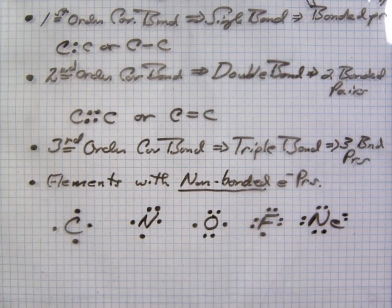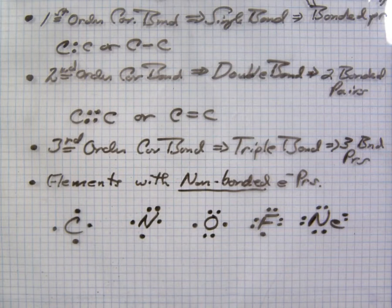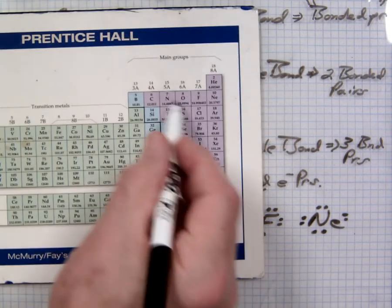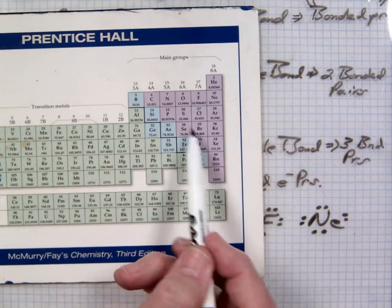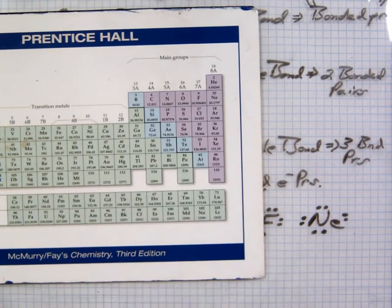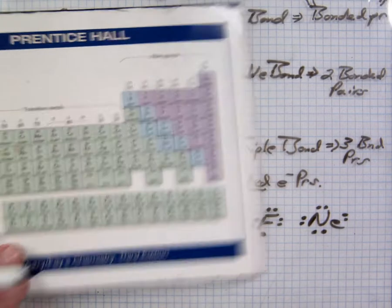According to the octet rule, elements gain or lose electrons by the path of least resistance to achieve a noble gas configuration. For molecular bonding, we're talking about molecular compounds — two or more non-metals. We're working exclusively on the right side of the periodic table. All of these elements have small radii and strong electron affinities; they gain electrons and bond together by sharing electrons.